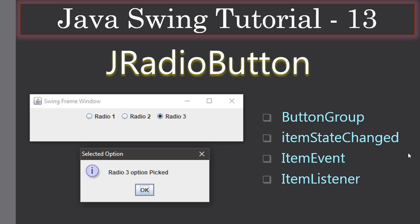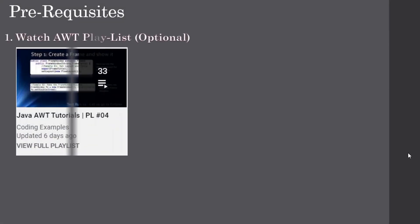Hello friends, welcome to the Java Swing tutorial. In this video we are going to see how to use the JRadioButton component from the javax.swing package. You will learn what a ButtonGroup is — we may have already used ButtonGroup in the Swing tutorial and will use it again. You will also learn how to detect which radio button is selected by handling the item event through ItemListener and the method ItemStateChanged.